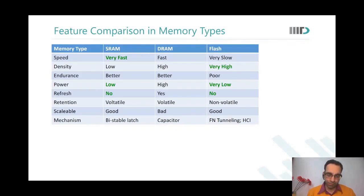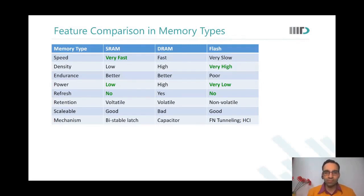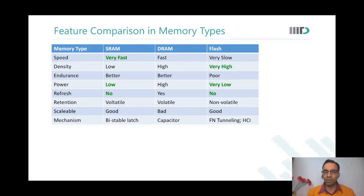A student asked: if we use capacitors with lesser area, why does the refresh frequency increase? If the capacitor has lesser area, its value reduces. Even keeping the same voltage, the charge stored on the capacitor reduces. Now, device leakage actually increases as you scale — even if we assume it stays the same as earlier technology, the lesser charge will leak away faster and become unreadable sooner. So you need to refresh more frequently.